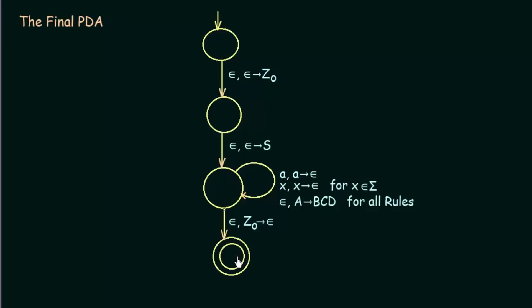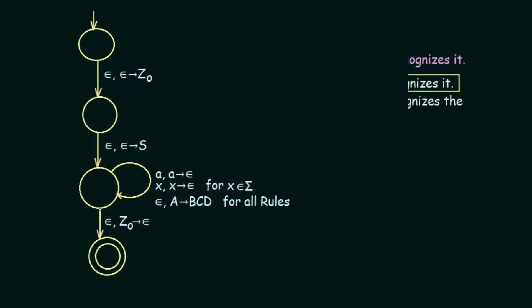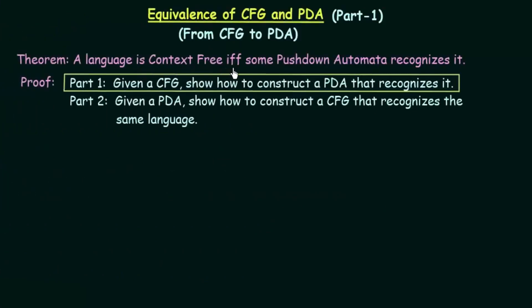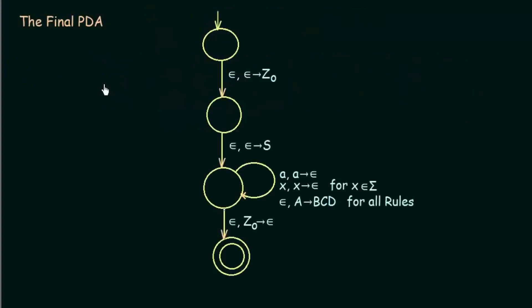The language generated by the context free grammar is accepted by this pushdown automata. In a generalized way we were able to design a pushdown automata for the context free grammar, proving part 1 of our theorem: a language is context free if and only if some pushdown automata recognizes it, and hence CFG and PDA are equivalent. In the next lecture we will see the second part of this proof.